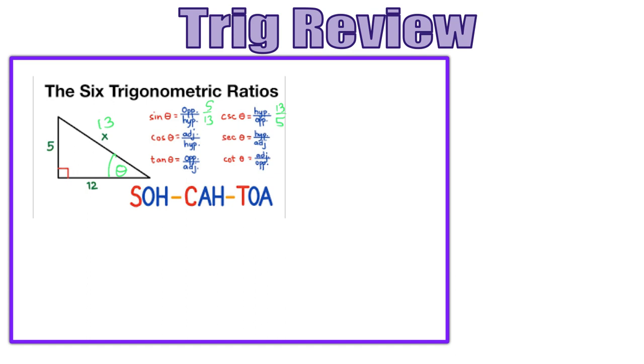Cosine is adjacent over hypotenuse, which in this case would be 12 over 13, and secant would be that reciprocal. Notice the same letters never go together. So sine, S goes with cosecant, cosine, C goes with secant. So we never match the same letters up together.